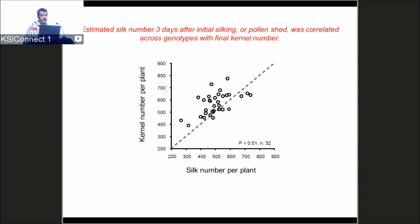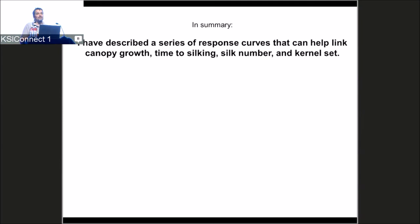In summary, I have described functional relationships and response curves between canopy growth, time to silking, silk number, and kernel set. This is what I call trait dissection — starting from ASI as a trait and functionally connecting it to plant growth. We described functional relationships whose parameters you can later target with QTL mapping or place into a crop model.